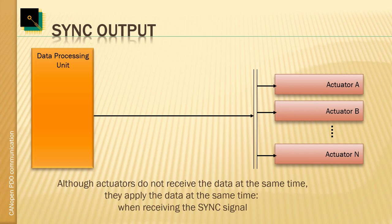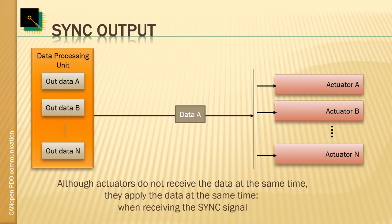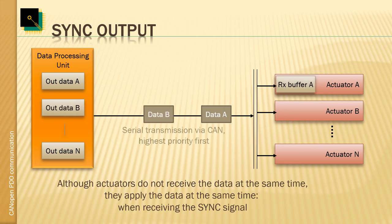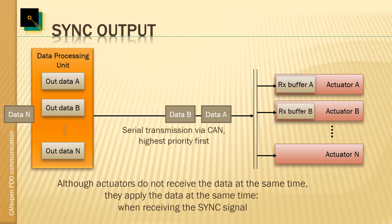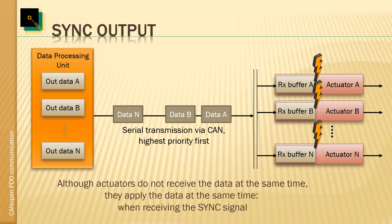The data processing unit or controller calculates the new data to be applied, transmits it serially via the network, and all the actuators receive the data in their receive buffers. But they do not yet apply it — they wait. Only with the receipt of the next sync signal do they actually apply the data to their outputs. Thus, the output is parallelized with the sync message, and they all apply their data in parallel.